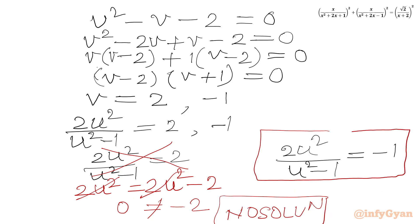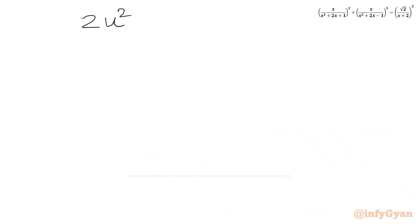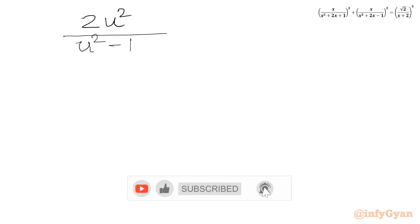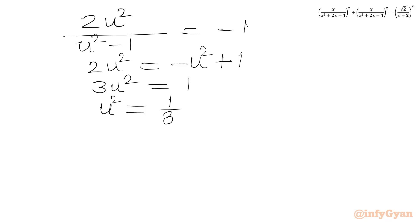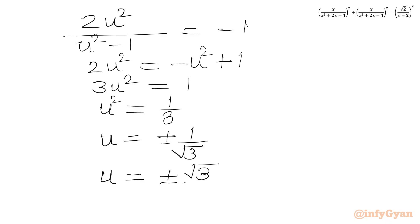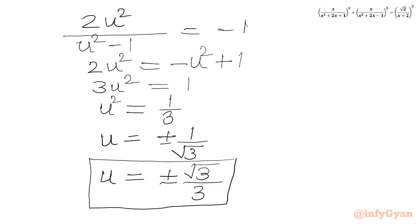From the second equation 2u²/(u²−1) = −1, cross multiplying gives 2u² = −u² + 1, so 3u² = 1, or u² = 1/3. Taking the square root of both sides, u = ±1/√3. Rationalizing the denominator by multiplying by √3/√3, we get u = ±√3/3.